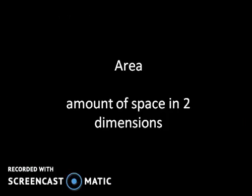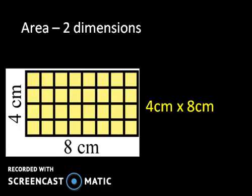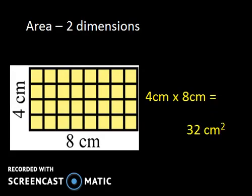The next is area. Area is the amount of space in two dimensions. If we have a flat surface, there are two dimensions: length and width. Here we have an object that measures 4 centimeters by 8 centimeters. To find the area, we're going to multiply length times width, and we end up with 32 square centimeters, or 32 centimeters squared. And that would be area.